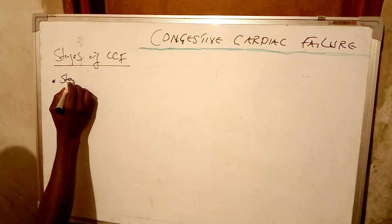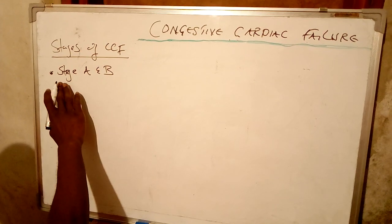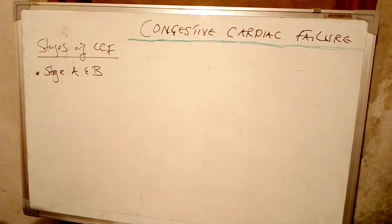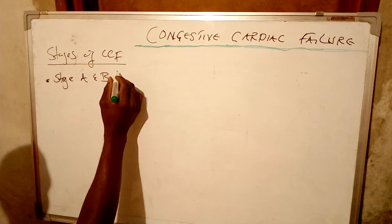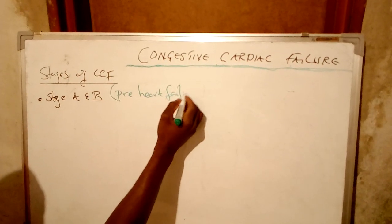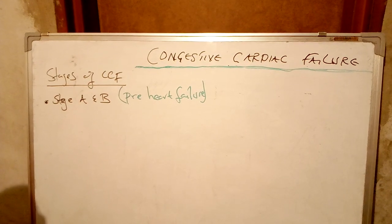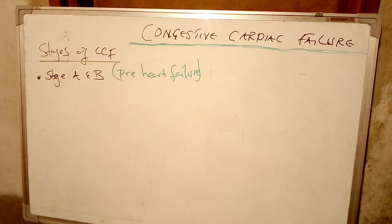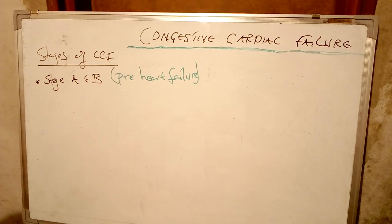Stage A and B. These are patients who actually have the predisposing factors that can make them to have congestive cardiac failure — such as patients who have hypertension, patients who have coronary artery disease, and patients who have diabetes mellitus. This stage is also called the pre-heart failure. These are patients who are in stage A and B.